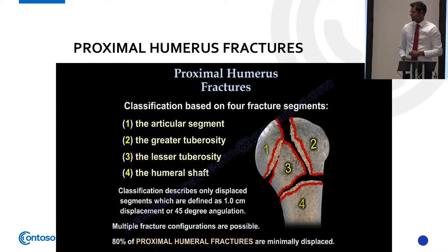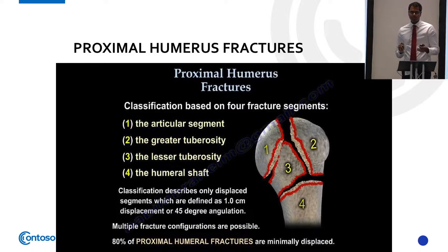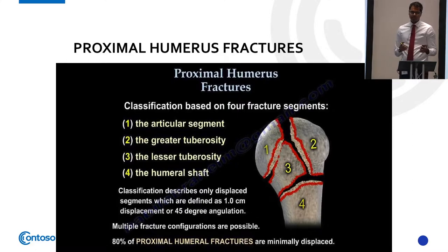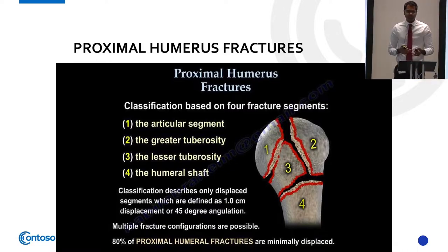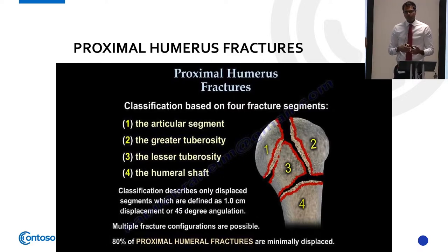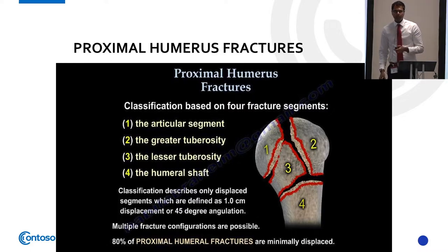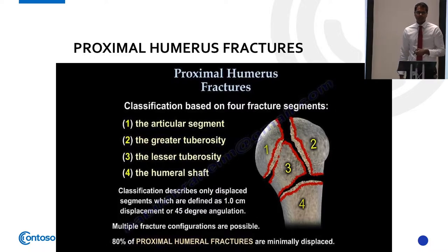Proximal humerus fractures normally break into two pieces — that's the most common type. Usually in the elderly osteoporotic population from a simple fall, the bone is fragile and breaks into two pieces. With those fractures we don't keep them in a sling too long because the shoulder will become really stiff, so we'll keep them in a sling for about a week then start pendular exercises.